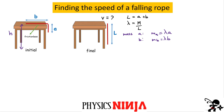Since the table is frictionless, I can write down conservation of energy for the system. The total energy gives us: initial kinetic energy (which is zero, since it starts from rest) plus the initial gravitational potential energy must equal the final kinetic energy plus the final gravitational potential energy once the rope is all the way off. So: zero plus initial GPE equals K_final plus final GPE. Let's first look at the initial gravitational potential energy. We have mass B at height H, so its gravitational potential energy is M_B times g times H.